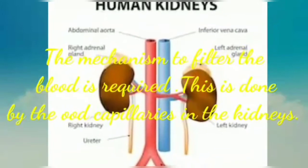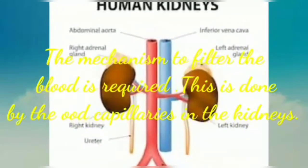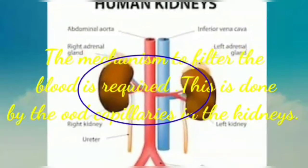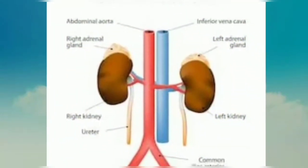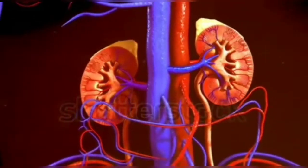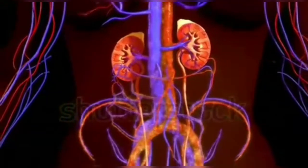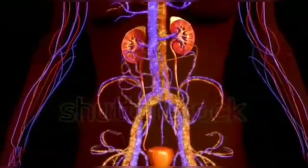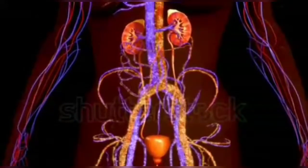This is done by the blood capillaries in the kidneys. When the blood reaches the two kidneys, it contains both useful and harmful substances. The useful substances are absorbed back into the blood. The waste dissolved in water is removed as urine.